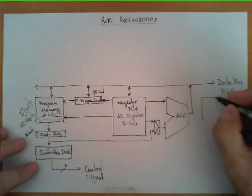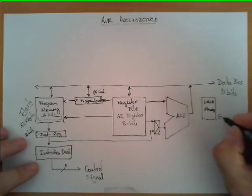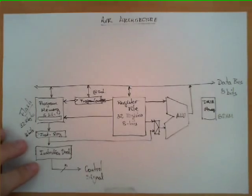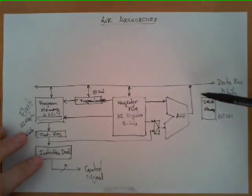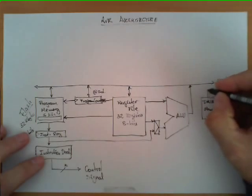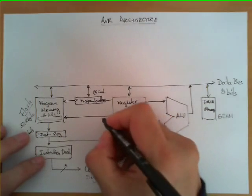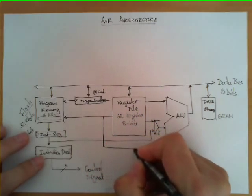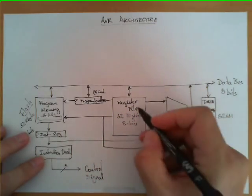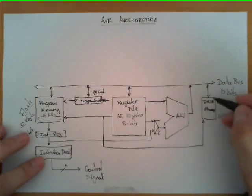We have two more blocks on this side of the data path. One is the data memory, which by the way is of type SRAM. It is implemented so that the program can manipulate certain data stored in this chip. It also has a connection to the data bus. The two connections that this block receives are: one from the register file — from which we can obtain a memory address or data to be written in memory.